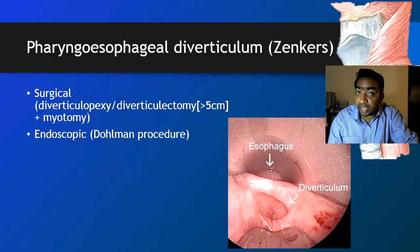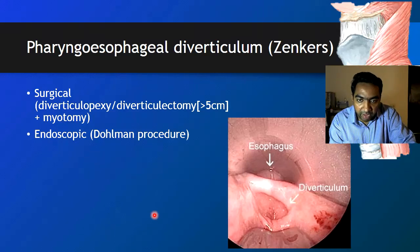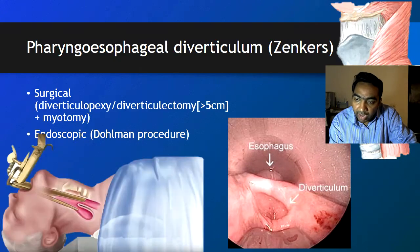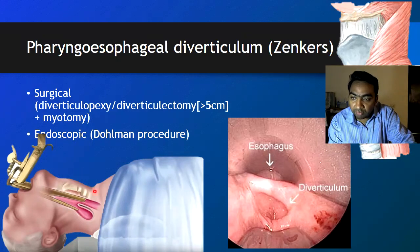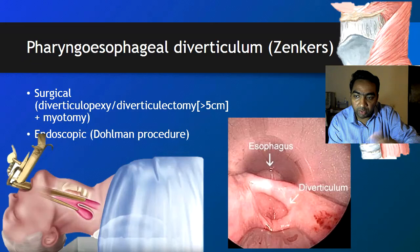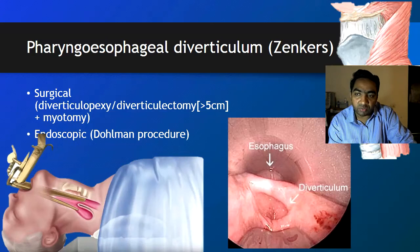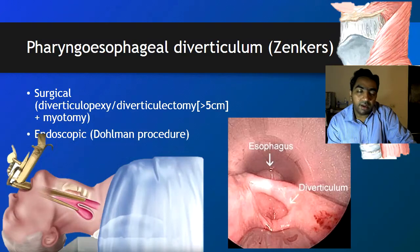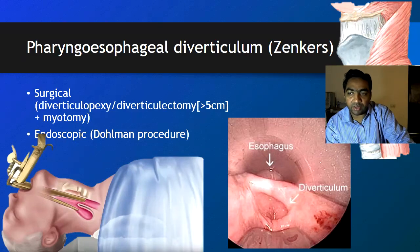The endoscopic procedure is called Dohlman's procedure. In Dohlman's procedure, the endoscopic view of the diverticulum is visualized. An endoscope is passed with one limb into the diverticulum and the other limb into the esophagus, and it is stapled so that the wall between them is cut through, forming an anastomosis between the diverticulum and the esophagus. Dohlman's endoscopic procedure is better for medium-sized diverticula. For larger diverticula, diverticulectomy is preferred, and for smaller ones, Dohlman's procedure does not give adequate myotomy and may fail.